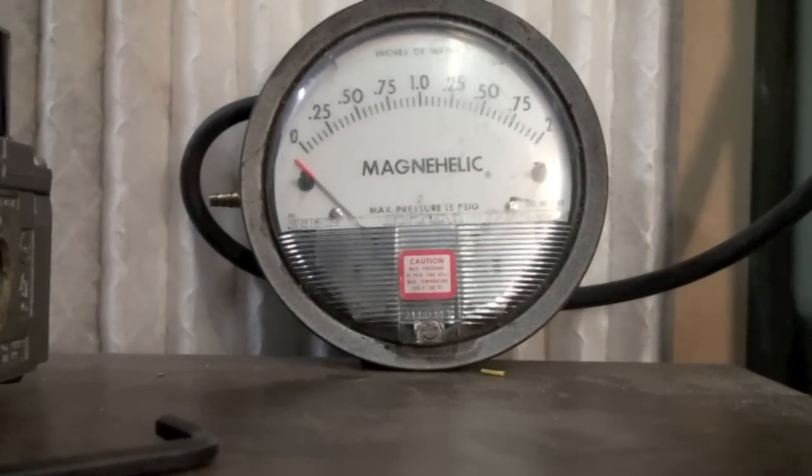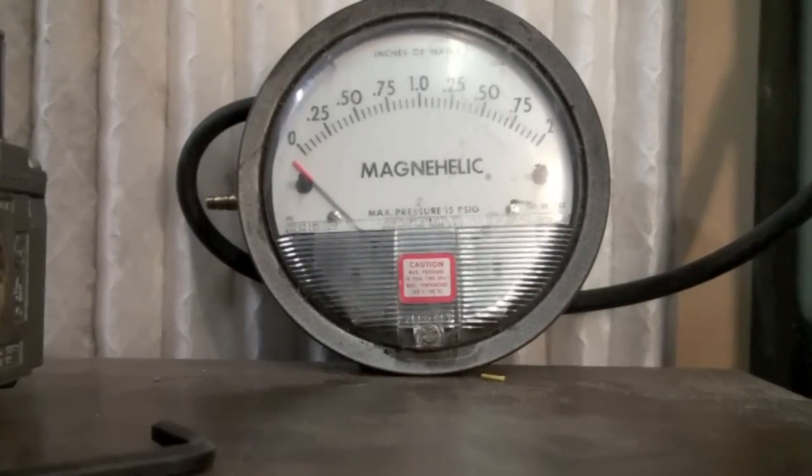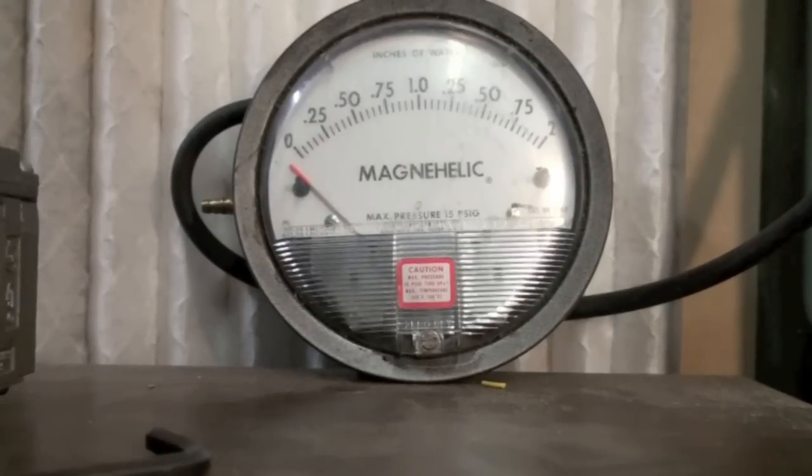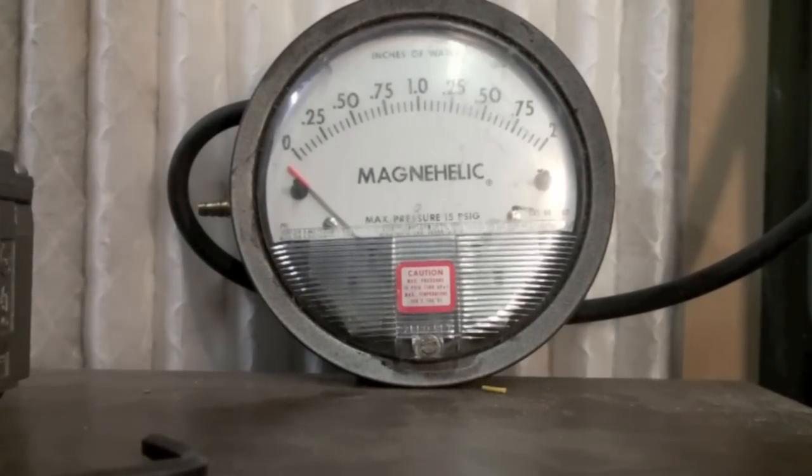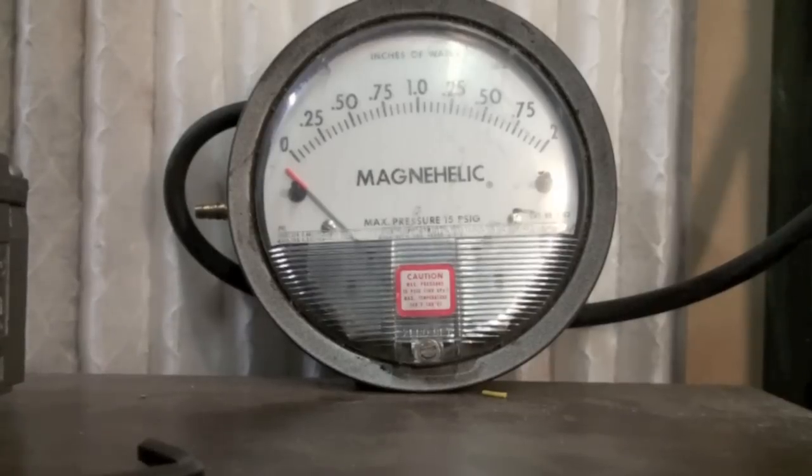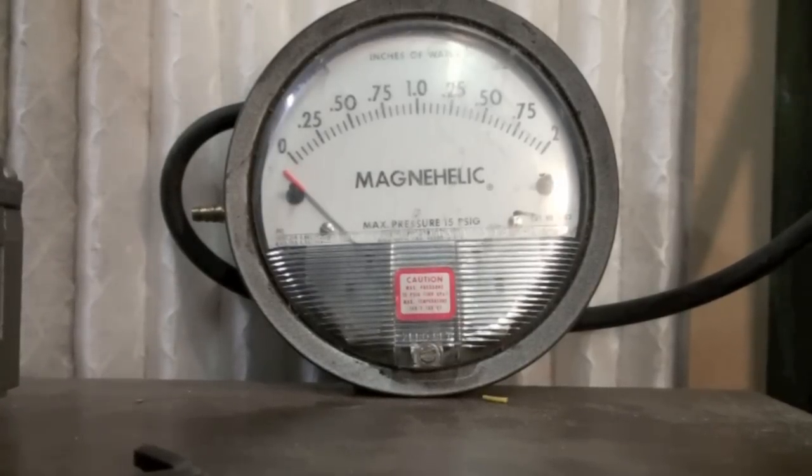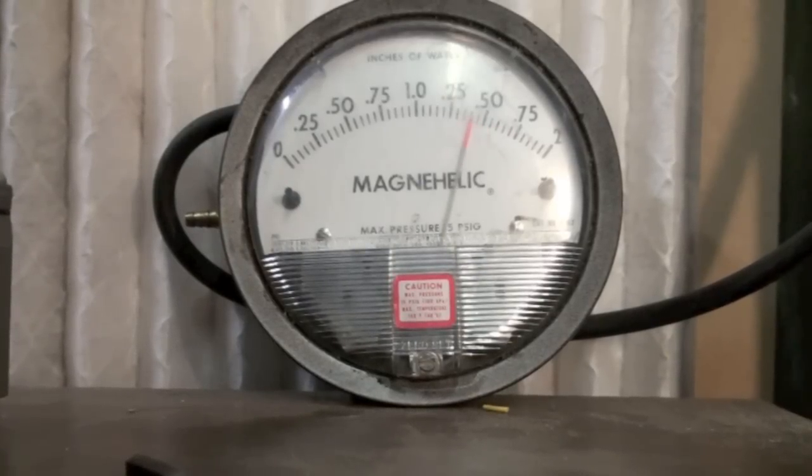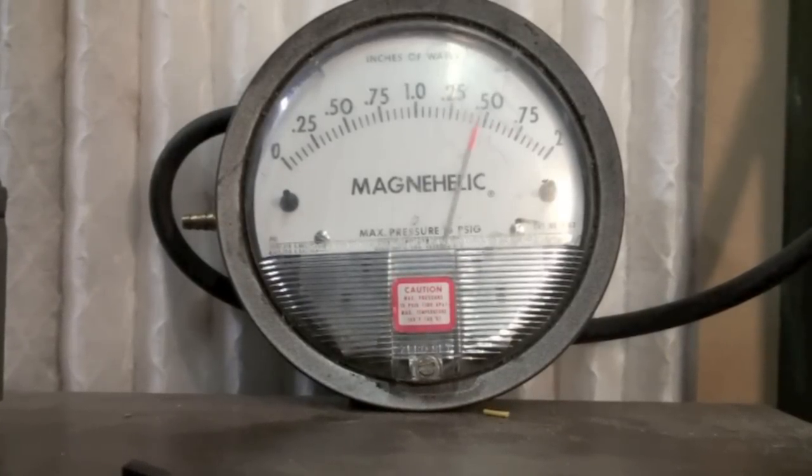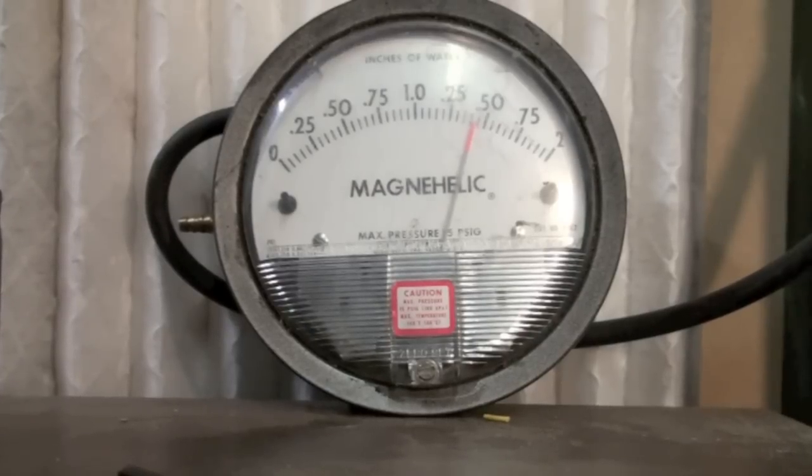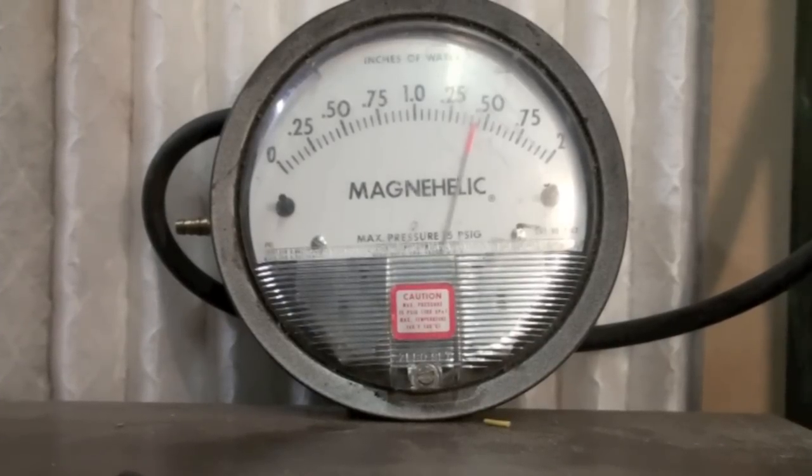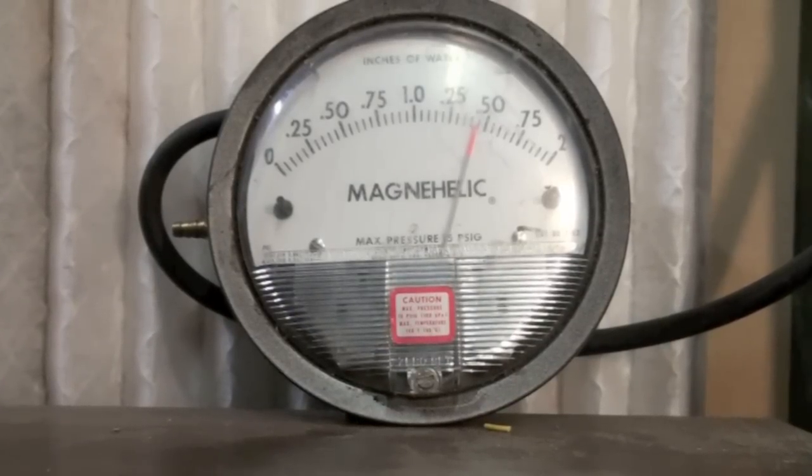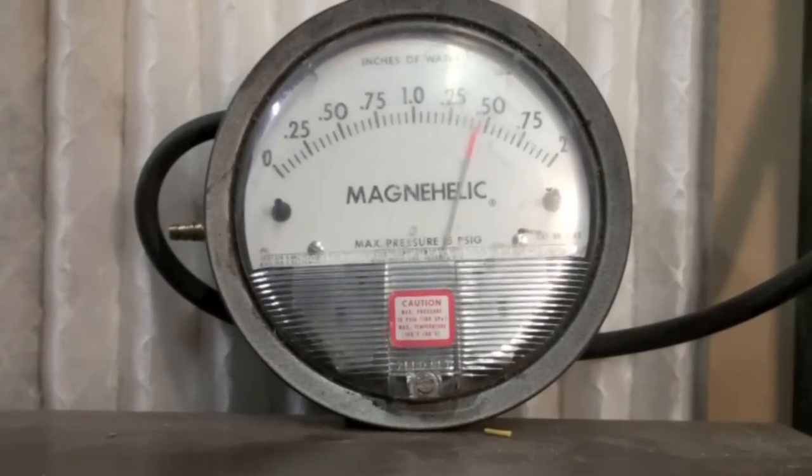We've got the MagniHelix set up. Showing a little negative pressure. That's from the inducer coming on. We should be getting the gas pressure coming on very soon. There it comes. Looks like we are about 1.4 to 1.45 according to the MagniHelix.